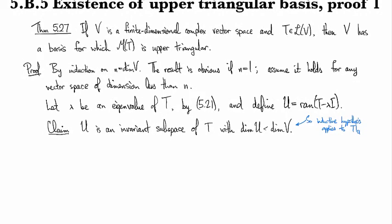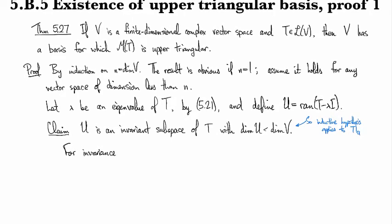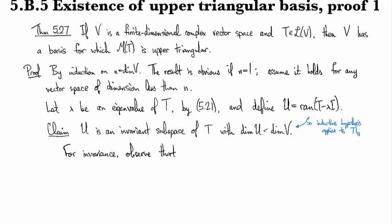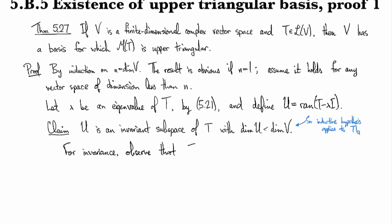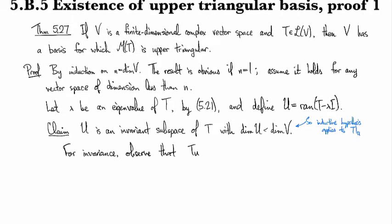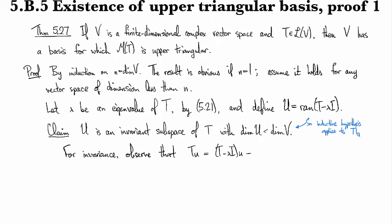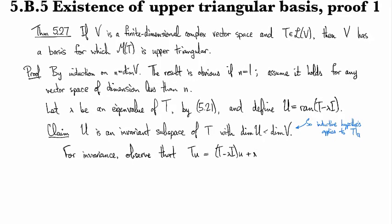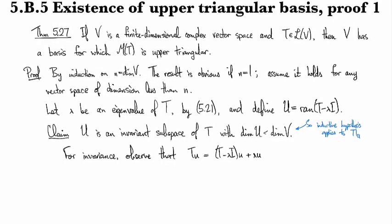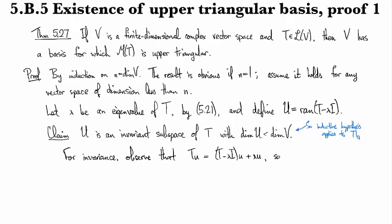All right, so to prove this claim, for the invariance part, observe that you can always write, so if I have TU minus lambda U, and then I add it over to the other side. So this is true for any U whatsoever, right? I've written the same thing on each side of the equal signs, and then like pulled one term over to the right.